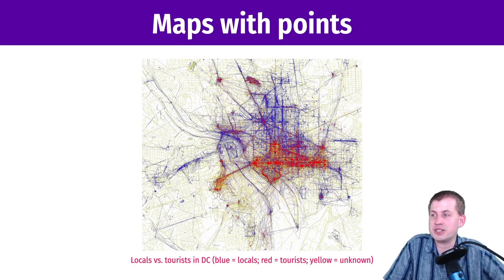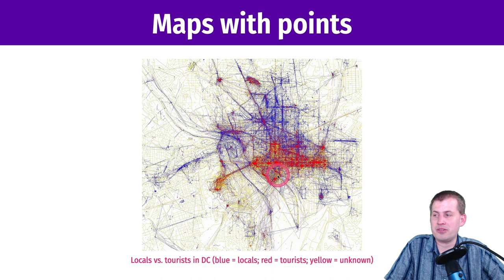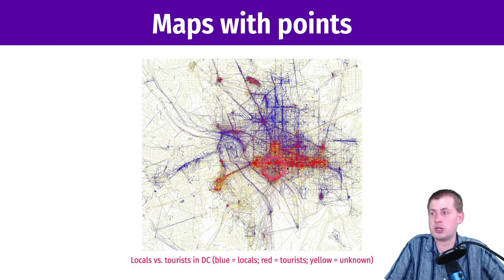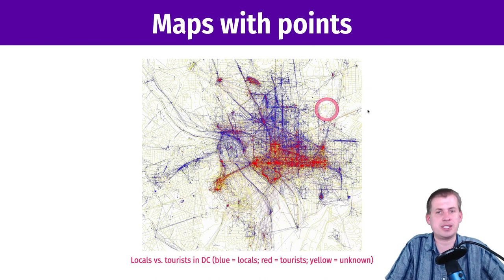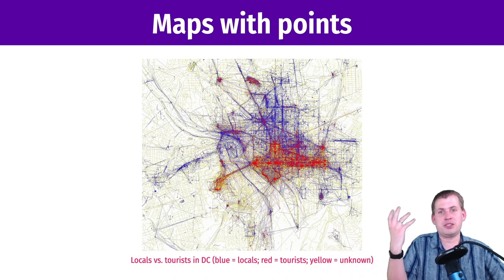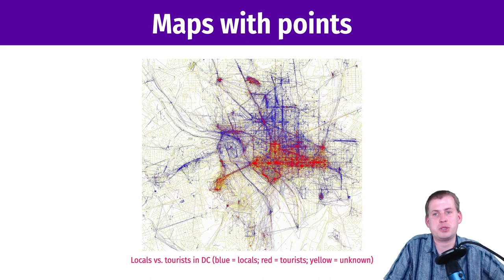If you've ever been to Washington DC, you can guess that this whole red strip is the National Mall. The Lincoln Memorial is down here, the Washington Monument in the middle, the Supreme Court and US Capitol up here, the White House right here, the Jefferson Memorial here, and Arlington National Cemetery over here. These two red areas are the National Zoo and the National Cathedral. Locals aren't taking pictures at the mall — they're in residential areas, taking pictures of their food. It's a really cool story told with just points colored by tourist status. They didn't use ggplot, but the same grammar of graphics principle applies.